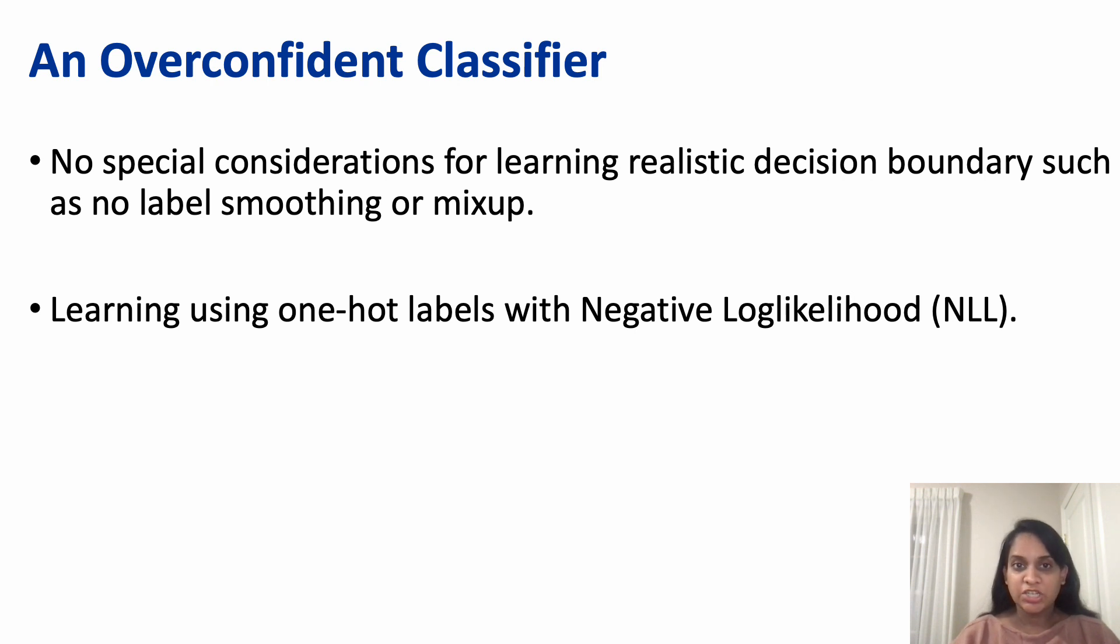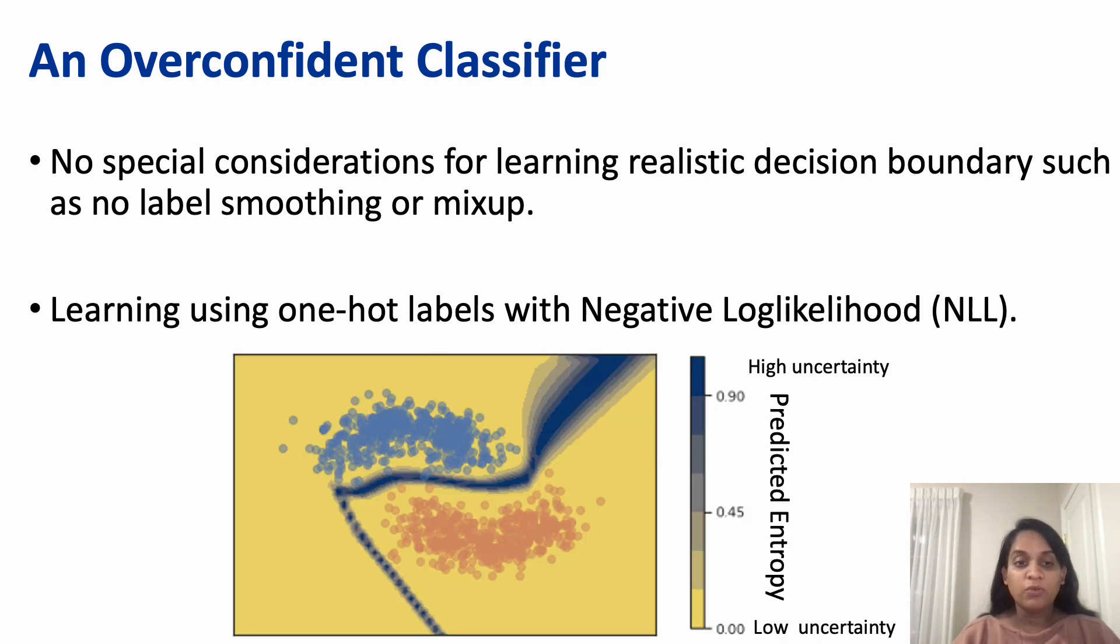Without special consideration while training, such as performing label smoothing or mix-up, it is very easy to learn an overconfident classifier. This happens because most classifiers are trained on one-hot labels with negative log likelihood loss and the models end up overfitting to the loss function. For example, here the classifier learns a very thin decision boundary with very low uncertainty and high confidence for all three kinds of test samples.